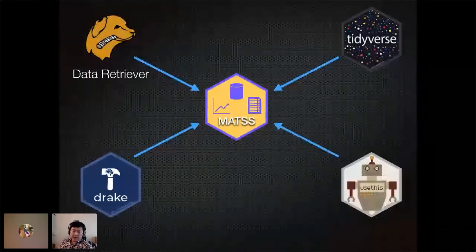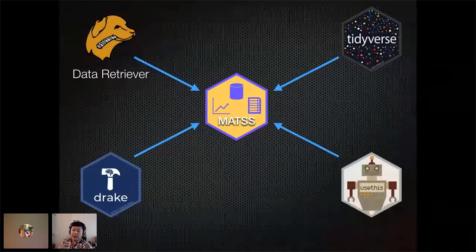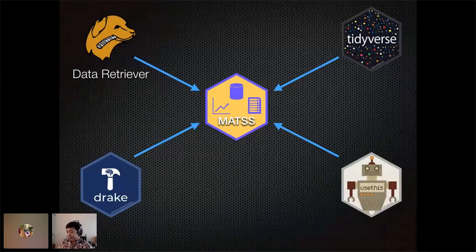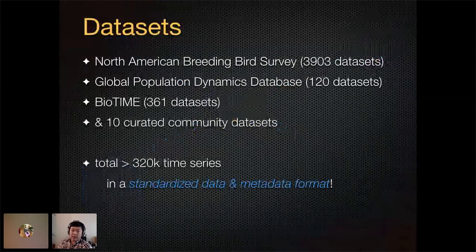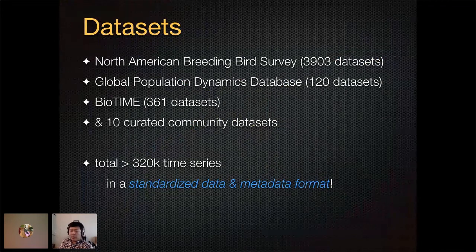We build off of templates to provide a research compendium template to enhance reproducibility and make it really easy to share your work. Some of the data sets that we have linked to with our project include the North American Breeding Bird Survey, the Global Population Dynamics Database, the BioTime database, as well as 10 individually curated data sets, totaling over 300,000 time series.